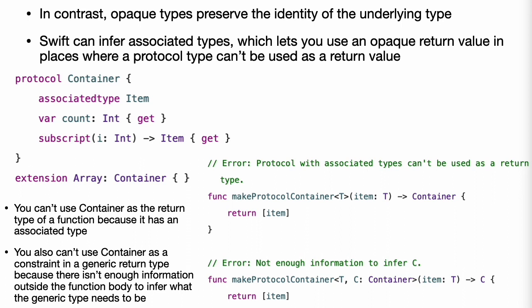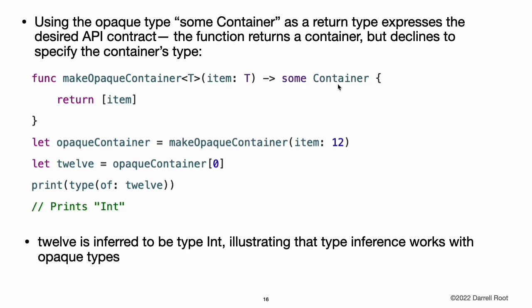In contrast, opaque types preserve the identity of the underlying type. Swift can infer associated types, which lets you use an opaque return value in places where a protocol type cannot be used as a return value. For example, here is a version of the container protocol from generics. You cannot use container as the return type of a function because that protocol has an associated type. You also cannot use it as a constraint in a generic return type because there is not enough information outside the function body to infer what the generic type needs to be. Using the opaque type some container as a return type expresses the desired API contract. The function returns a container but declines to specify the container's type. The type of 12 is inferred to be Int, which illustrates the fact that type inference works with opaque types.